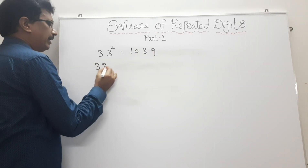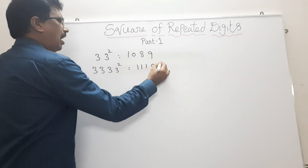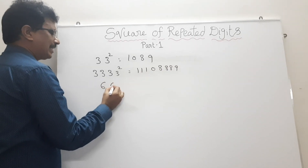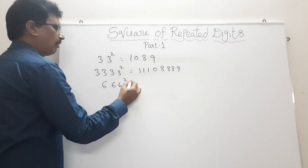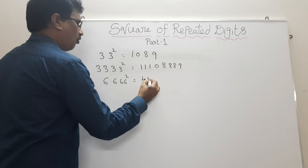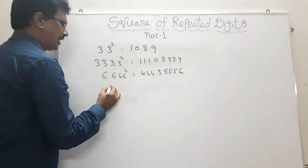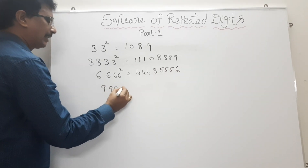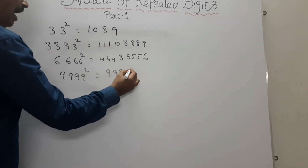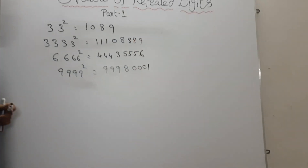Suppose, 333 squared equals to 111,088,9. 666 squared equals to 444,355,6. 9999 squared equals to 9,998,000,1. How it is possible?